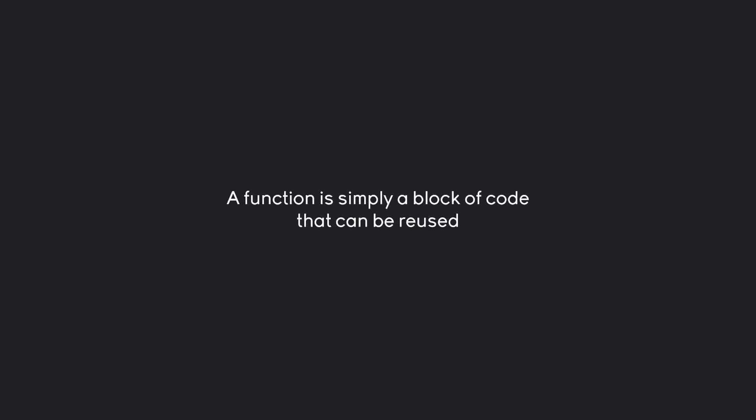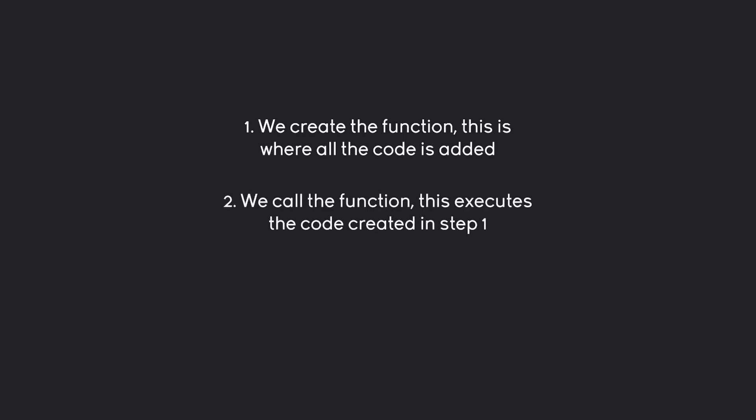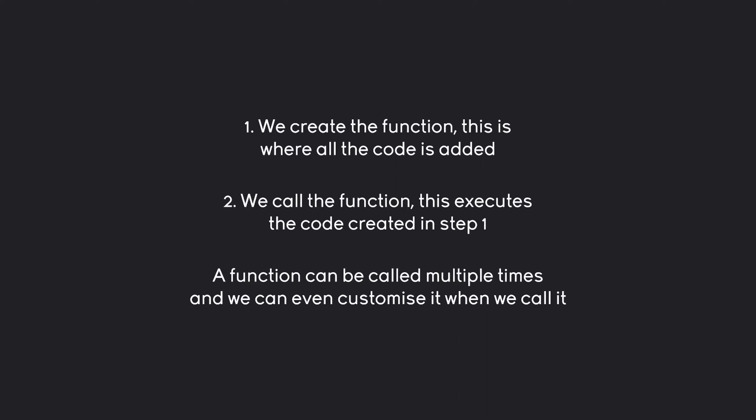To use functions we need a two-step process. For a function we first of all have to create the function — this is where we add all of the code to the function, or create the code inside of the function. Once we have that, we have to do what is called calling the function. Calling a function means you are executing the function, or telling the function to run and execute the code inside of it. You can also add information into the function when you call it. With all of that covered, let's actually create some basic functions.